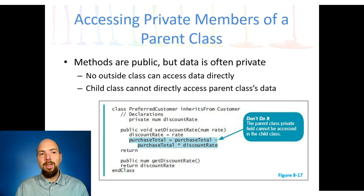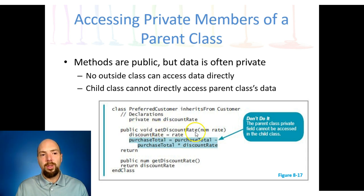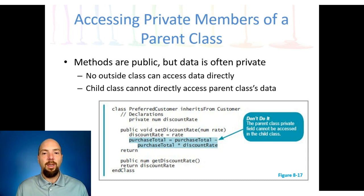The child class contains all the data fields and methods of the parent. If we have an attribute like ID number, both parent and child classes will have it — even though we didn't declare it in the child class, it gets inherited from the parent. We need ways to access data stored in our classes. The methods are public, but the data is often private. We don't want someone to directly manipulate our attributes, so we give them public methods to set and get values.